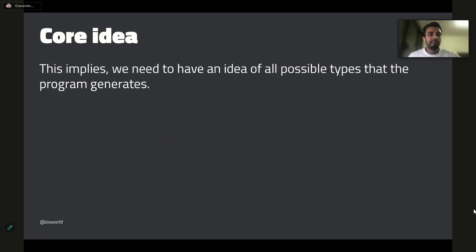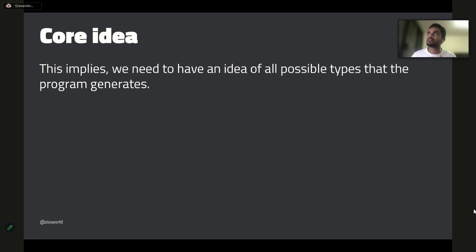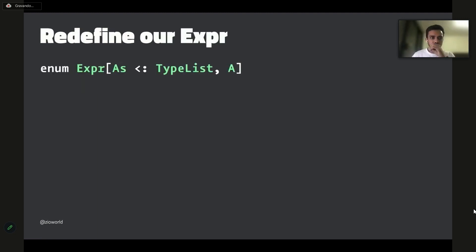The basic assumption here is that you must know all the possible types your program may generate — and that's actually valid in many use cases. For example, you can assume your application is going to read only 50 columns from the database, all of the fields being primitives like Int, Double, and String, and it cannot read any other complex types. You can represent that as the allowed types of your application, so if someone tries to read something else it gives a compile-time error.